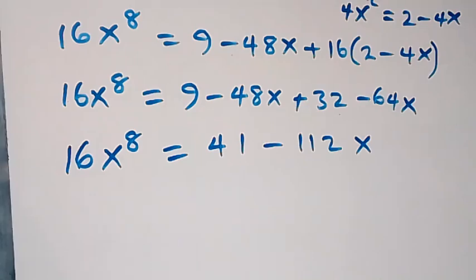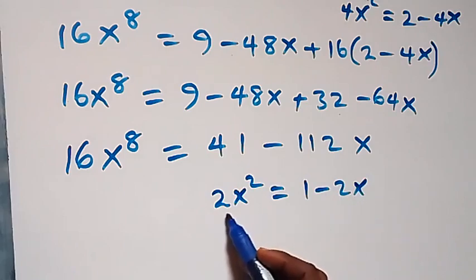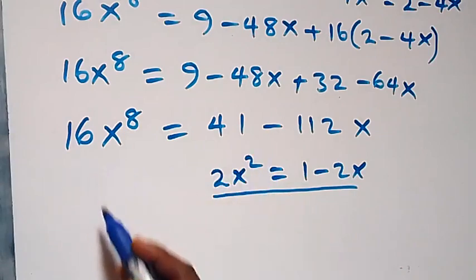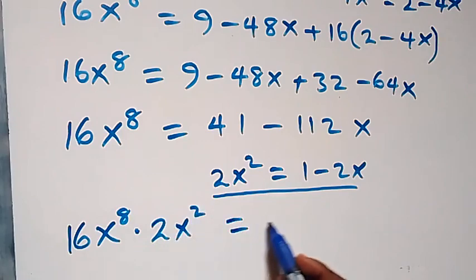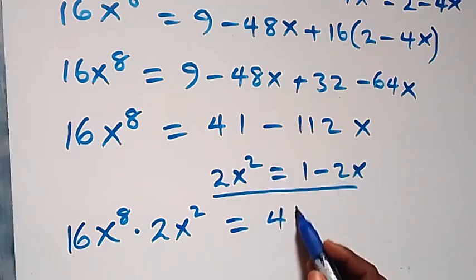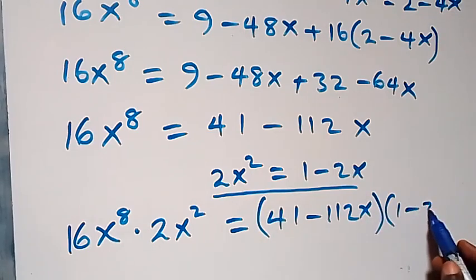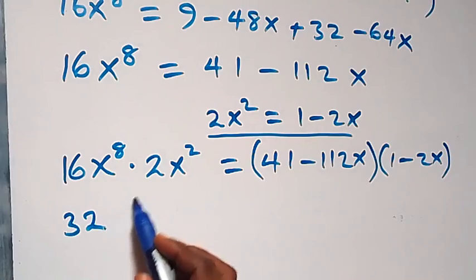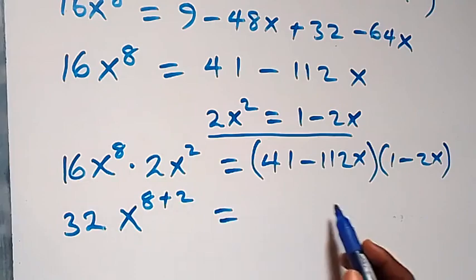Don't forget we are interested in getting x raised to power 10. We recall that 2x² equals 1 minus 2x from the previous equation. We multiply both sides by 2x², so the left side becomes 16x⁸ times 2x², giving 32x¹⁰.